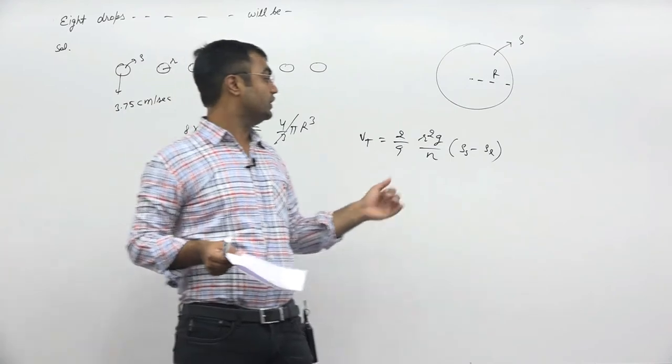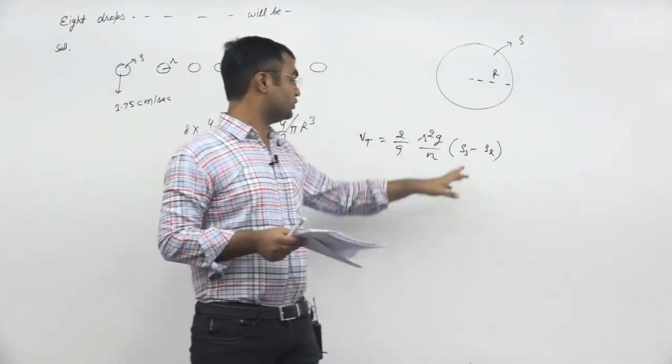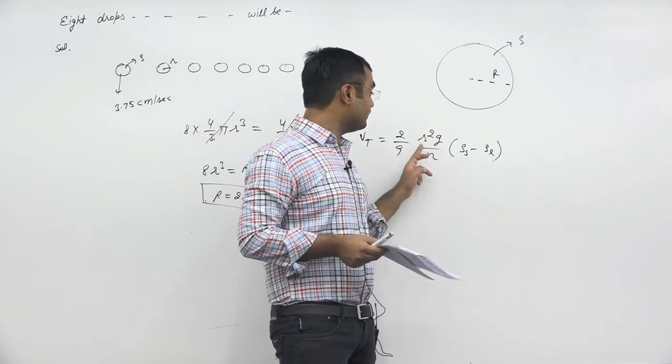Rho l is air density, which remains the same. Rho s, the density of these 8 drops, is the same as this single drop's density. So rho s also remains same. Only r value will double.